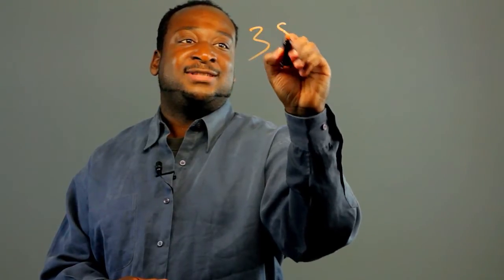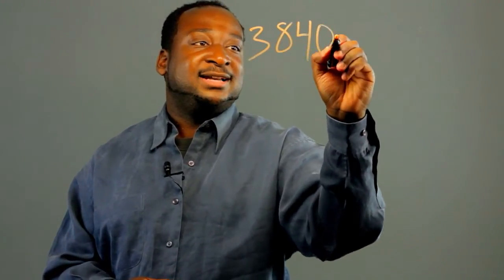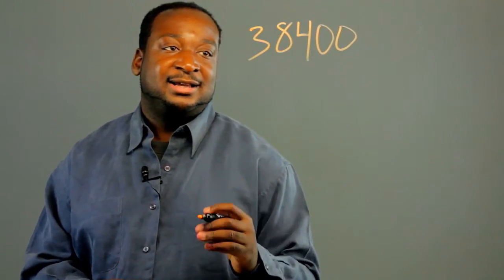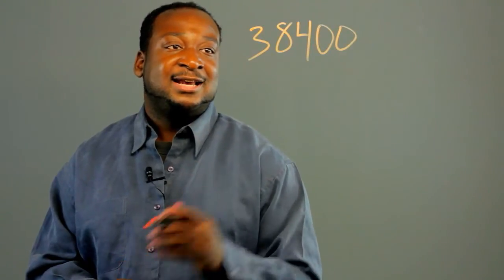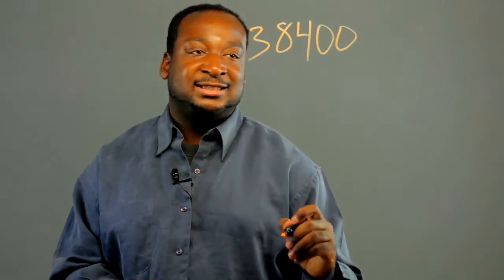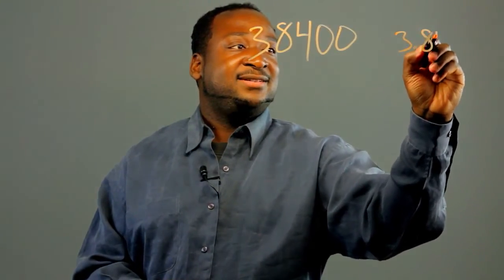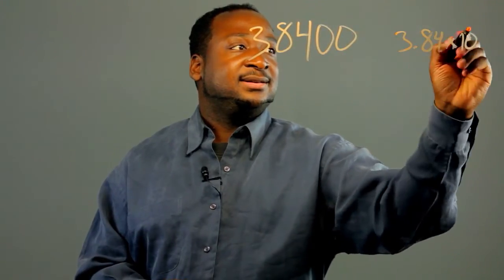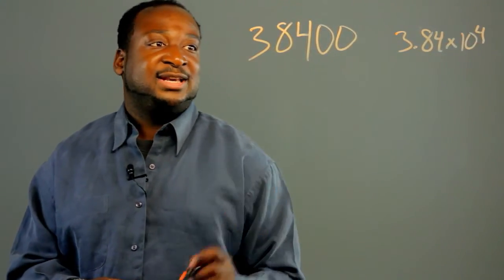Scientific notation is used to simplify usually large numbers, just taking out their significant digits — like 38400. This in scientific notation would be 3.84 times 10 to the fourth, making it smaller.